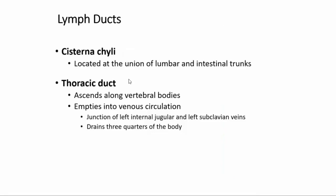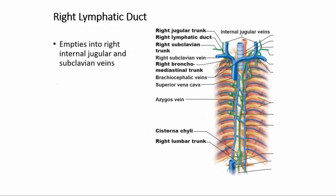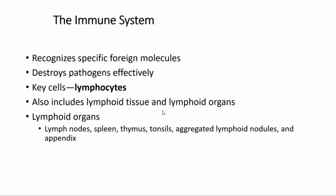Lymph ducts: the cisterna chyli and thoracic duct move lymph to the left venous angle. In the immune system, specific foreign molecules are recognized and pathogens are destroyed effectively. NK cells are a type of lymphocyte.